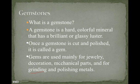Corundum, in the samples we have, would not be considered a gemstone because it is not colorful. It does not have a glassy — or vitreous — luster. So to be a gemstone, it has to have high hardness, around 9 or 10, and it has to be colorful and glassy.